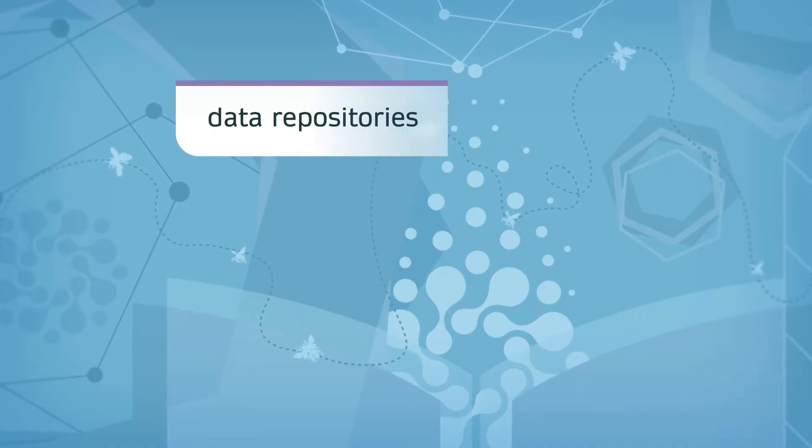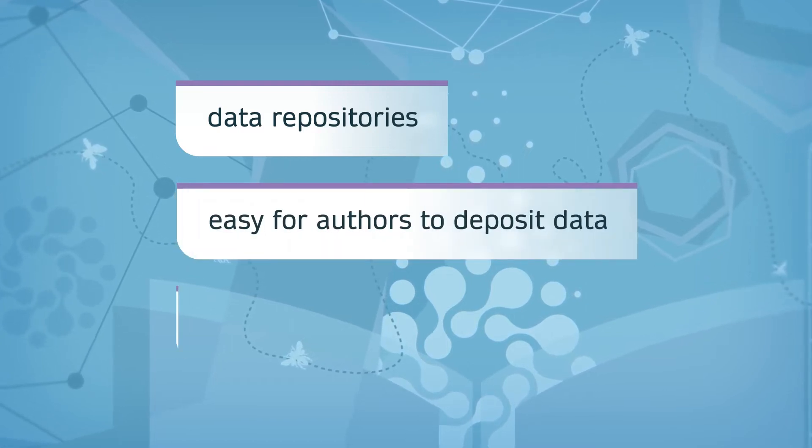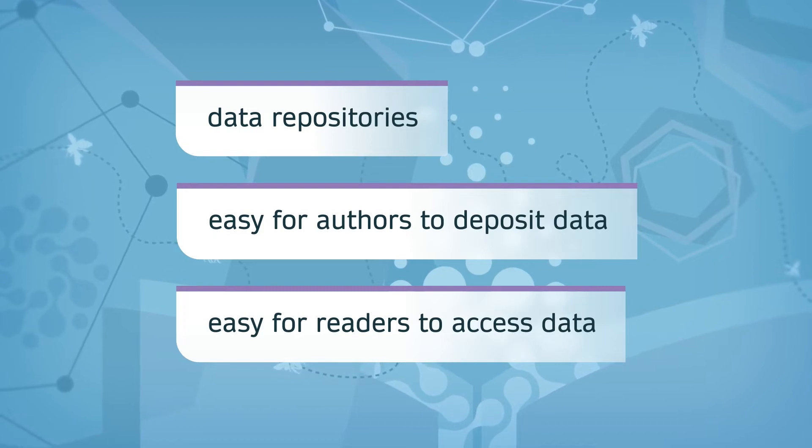Springer Nature is committed to helping authors satisfy the aspirations of their institutions and funders by making open sharing easier and by helping everyone increase the impact of their research. We work in partnership with the open research community to help researchers get the most out of their data. We are integrating data repositories with our systems — for example, Figshare — to make it easier for authors to deposit their data and for readers to access it once published. We also want to improve how articles and data are linked, and our partnership with OpenAerie uses AI techniques to help uncover these links, categorise them and feed them back into the research ecosystem.